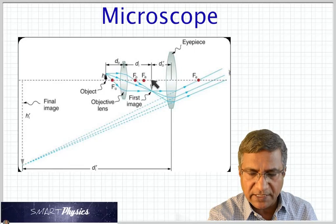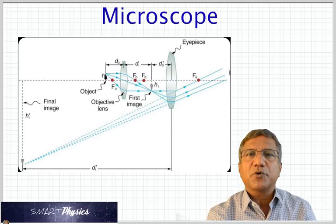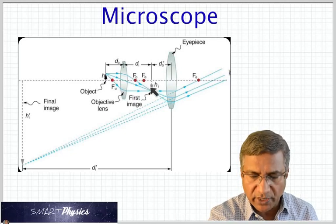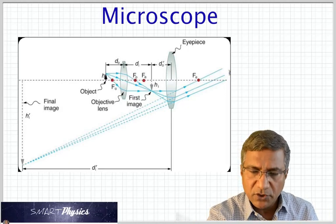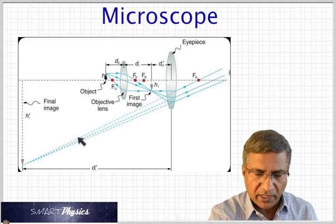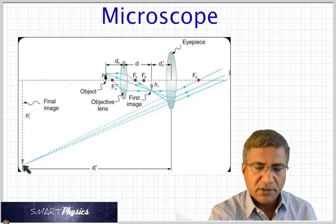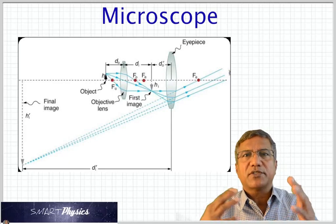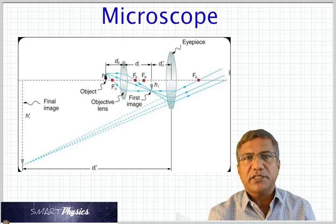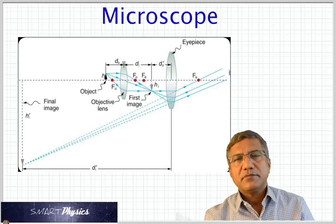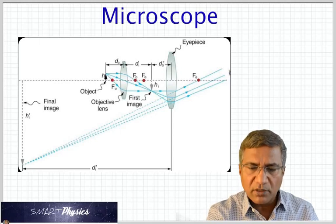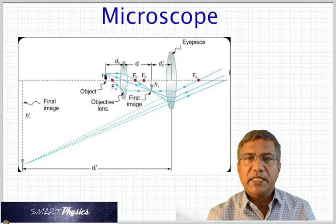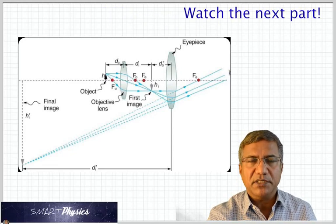Since this intermediate image is inside the focal point of the eyepiece, it's going to produce a virtual image. The rays continue and fall on the eyepiece, and after refraction they do not meet — they are diverging. So we extend all three backwards and they appear to be coming from here, which means the image is virtual because you had to extend the refracted rays. Finally, you get the magnified image which is virtual and inverted. The total magnification of the microscope is the product of the individual magnifications of the eyepiece and the objective.